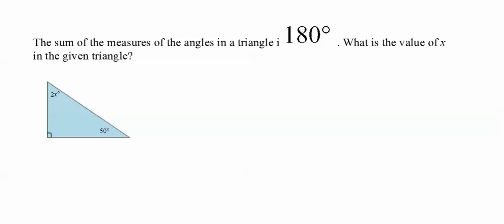Another one uses, here's one that says this. The sum of the measures of the angles of a triangle is 180 degrees. What is the value of X in the given triangle? So there's a couple things you need to know. First off, do you know what that means? That's 90 degrees. So what we can say is you've got 90 plus 50 plus 2X degrees is equal to 180.